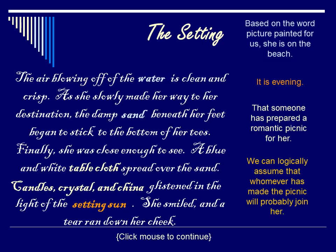The clues reveal the woman is on the beach. We can tell that it is early evening. It appears that someone is having a romantic dinner, therefore she will not be spending the evening alone. Now that you have completed learning about drawing conclusions and making inferences, please return to the module and complete your Let's Practice.